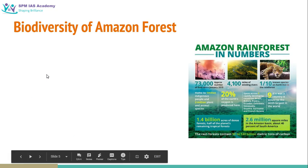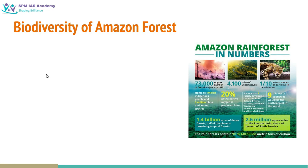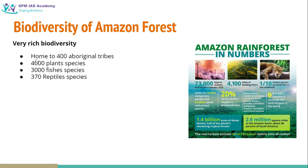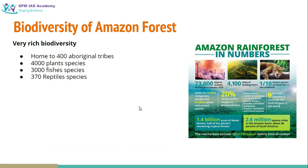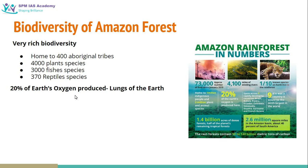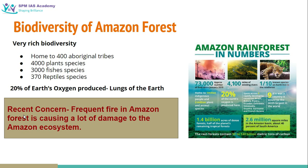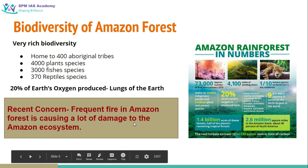The Amazon forest is very rich in its biodiversity. It is home to about 400 aboriginal tribes, 4000 plant species, 3000 fish species, and about 370 reptile species — and that is why it has a huge significance as far as biodiversity is concerned. About 20% of the Earth's oxygen is produced from the Amazon forest, and that is why it is known as the lungs of the Earth. The recent concern is that frequent fires in the Amazon forest are causing a lot of damage to the Amazon ecosystem.